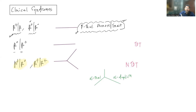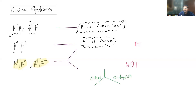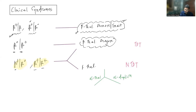If both alleles are severely affected — both are beta zero — meaning no beta globin chain is produced at all, this is the most severe condition known as beta thalassemia major. There are also intermediate conditions: if both alleles are affected but both are beta plus, or only one allele is producing a somewhat good amount of globin, this is intermediate between minor and major, known as beta thalassemia intermediate.